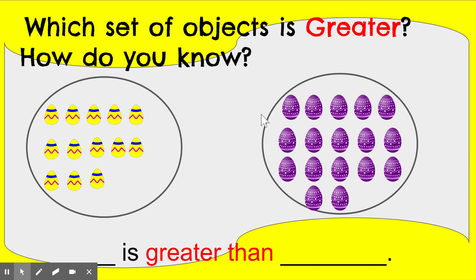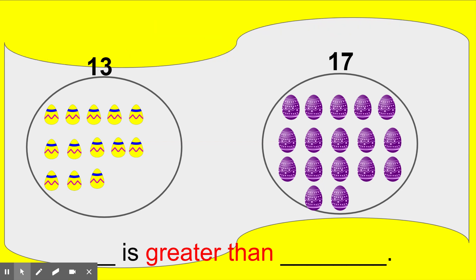And can you count the purple ones with me? One, two, three, four, five, six, seven, eight, nine, ten, eleven, twelve, thirteen, fourteen, fifteen, sixteen, seventeen. We have seventeen purple eggs. So now we know there are thirteen yellow eggs and seventeen purple eggs, and we have to decide which one is greater.